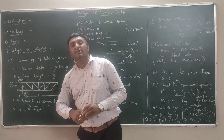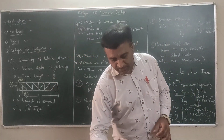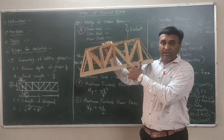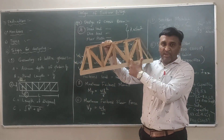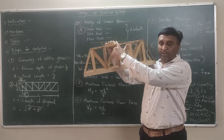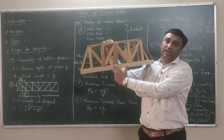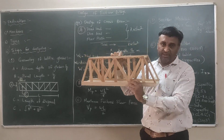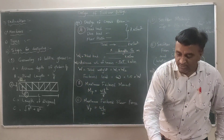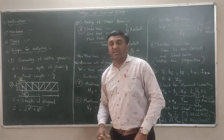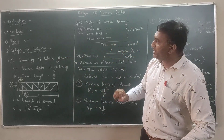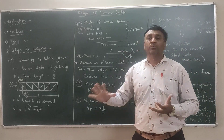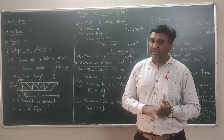The second topic is members. The members of a foot over bridge are: the vertical member, the diagonal member, the top chord member, and the bottom chord member. These four members must be designed for the foot over bridge. There are also three types of bridges: deck bridge, through bridge, and half-through bridge.